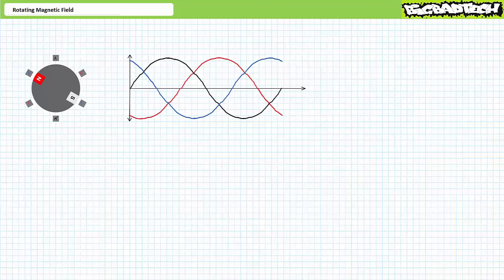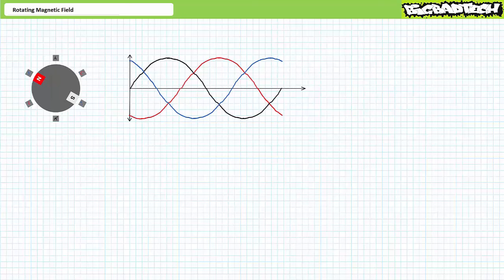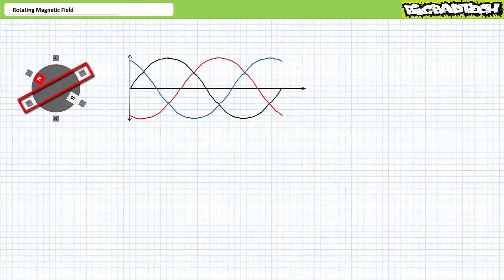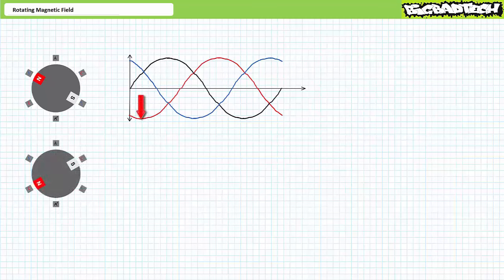Consider this subtle modification and its profound impact. Winding A remains energized by phase L1. However, L2 and L3 swap: winding B is now energized by phase L3, and winding C is now energized by phase L2. Starting with the rotor in the same position at time t = 0, ideally we should see the stator establish a rotating magnetic field in the opposite direction. When L2 peaks negatively, C is south and C' is north — the motor turns counterclockwise.